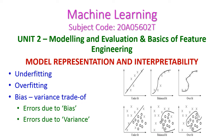In this machine learning class we will see the model representation and interpretability from the second unit, that is modeling and evaluation. In today's class we will see underfitting, overfitting, and bias and variance trade-off. The bias is nothing but errors — error due to bias and error due to variance.